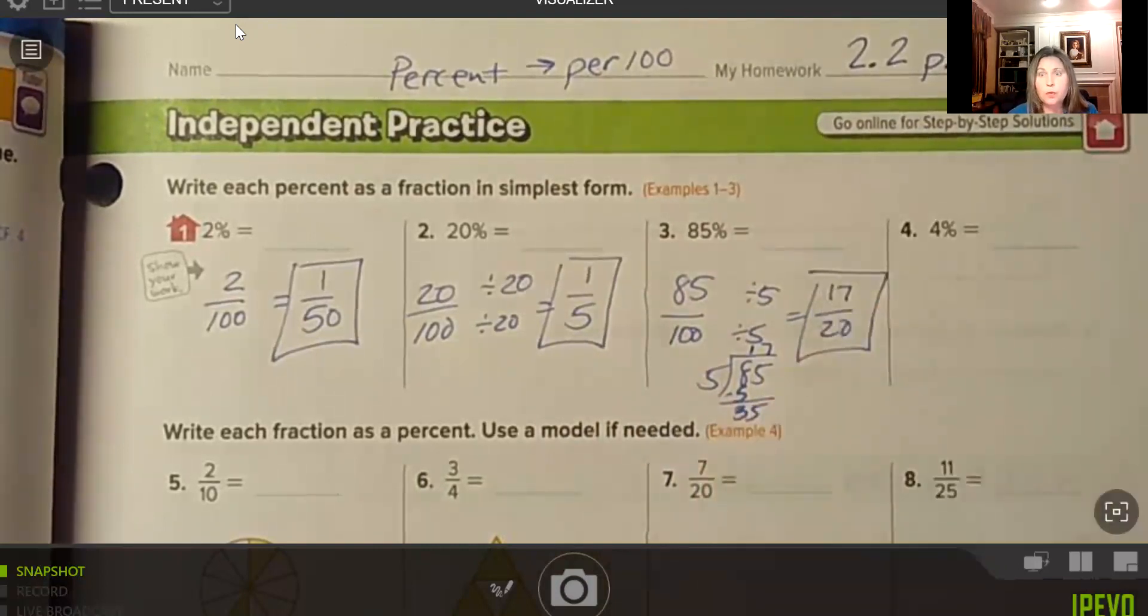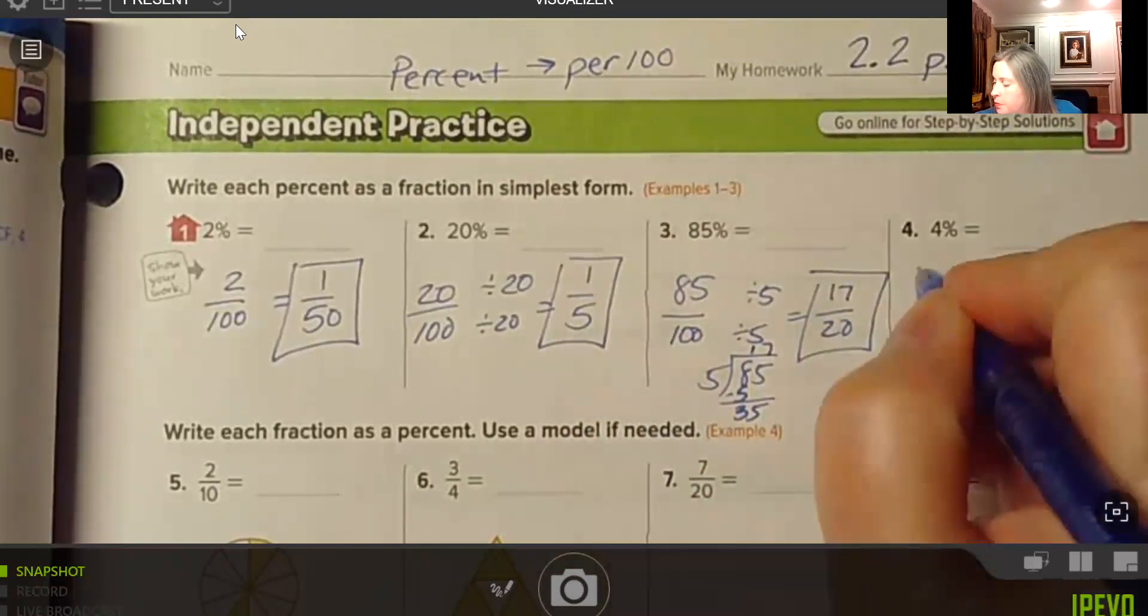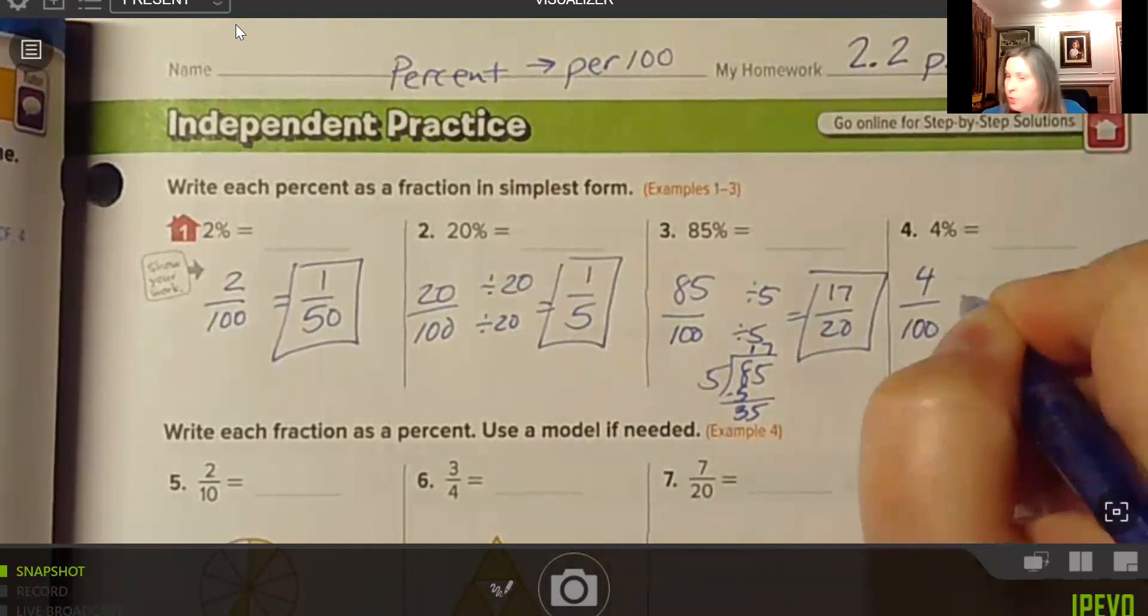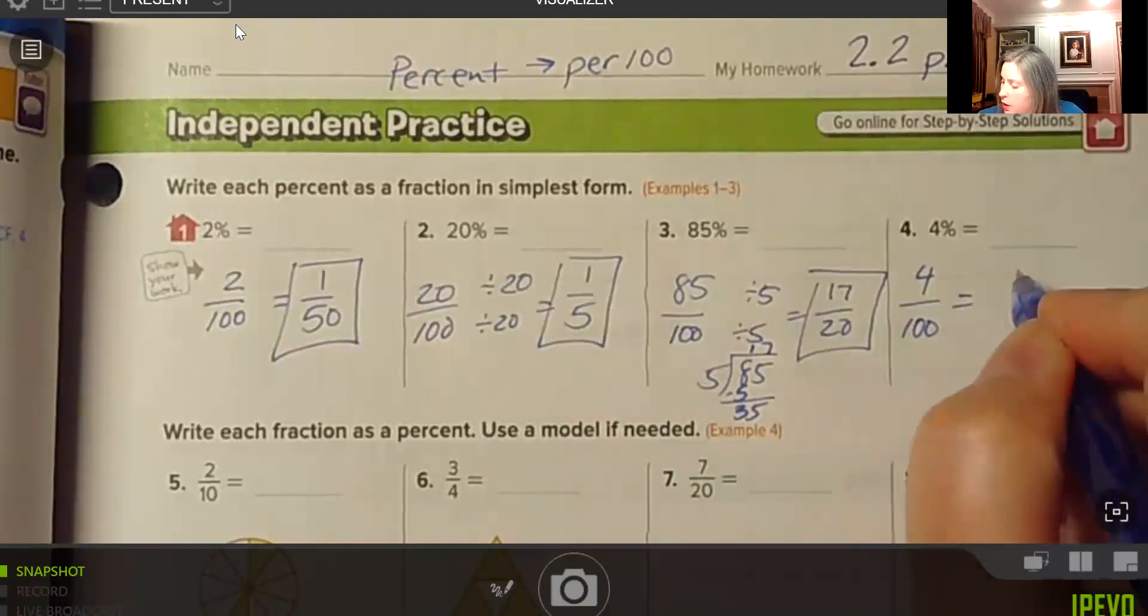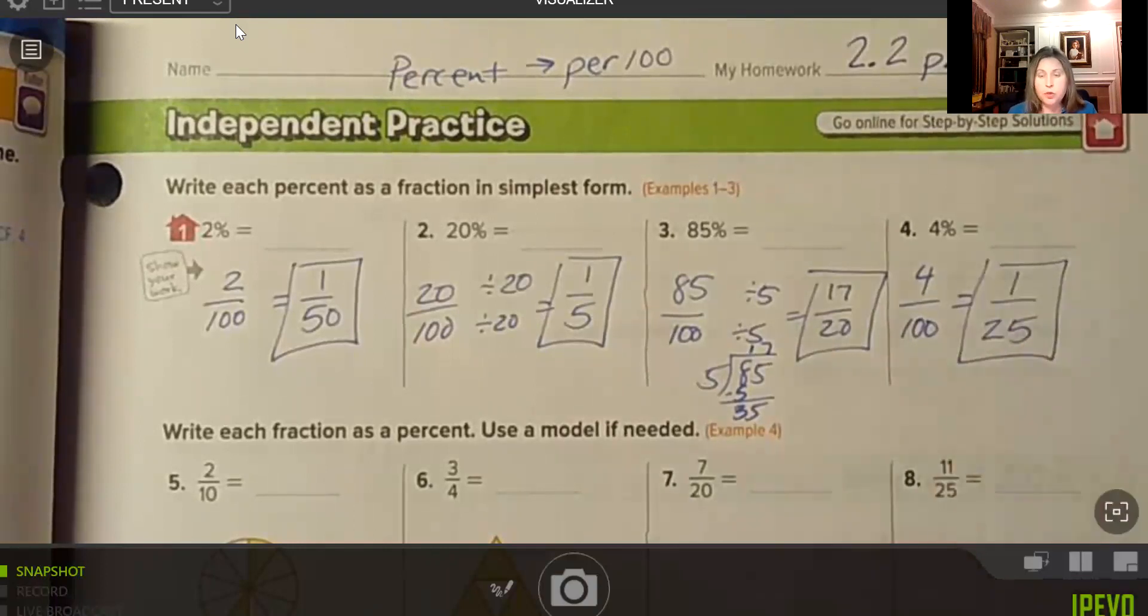Number 4, we have 4%, which is 4 per hundred. And those are both divisible by 4. The GCF is 4. So 4 divided by 4 is 1, and 100 divided by 4 is 25. We get 1/25.